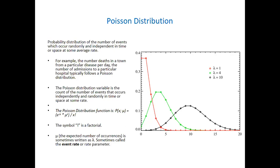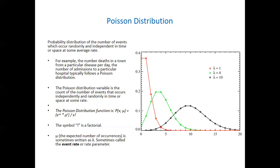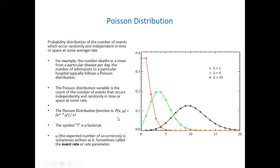The Poisson formula is very simple. The probability of x number of events occurring, provided the mean rate is mu, is e raised to power minus mu, multiplied by mu raised to power x, over x factorial. The e here is a constant - Euler's number - so you don't need to find it; it's a constant.